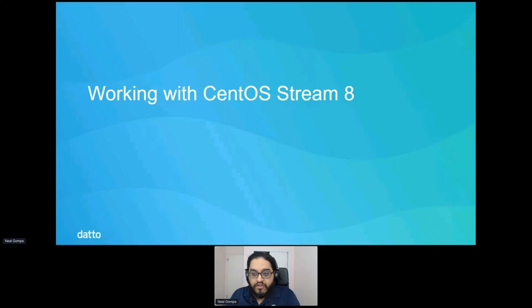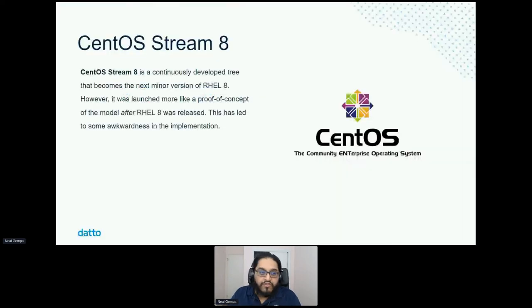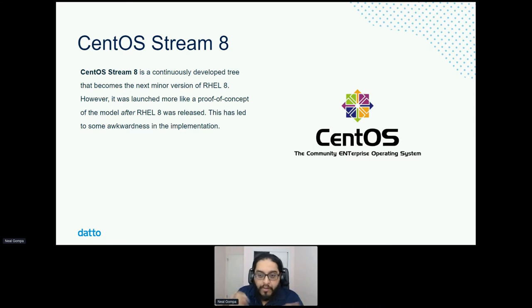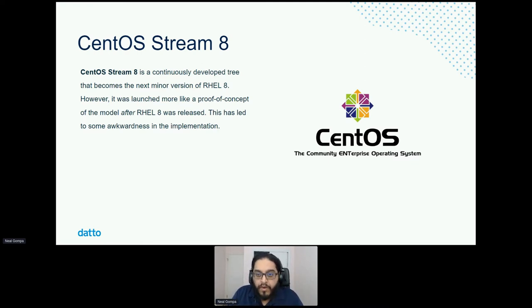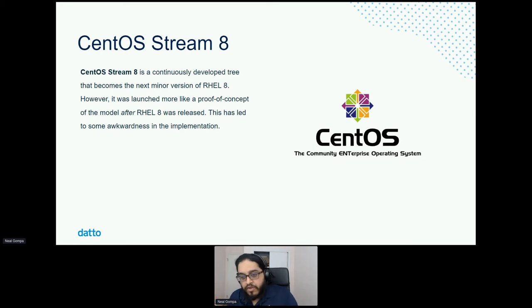CentOS Stream 8 was launched after RHEL 8 released, which makes some sense because the thing wasn't fully shaken out. It was really more designed as a proofing model of whether this could actually work. There were probably lots of skeptical people, questioning whether people really want to put things into the RHEL ecosystem. It came after RHEL 8, so it had some awkward workflows — RHEL is already being developed, it goes there first, then it comes to Stream, gets rolled up into a RHEL point release, and then was rebuilt into CentOS Linux.